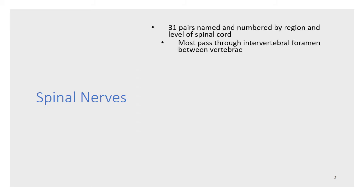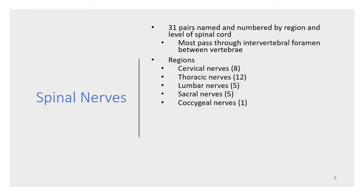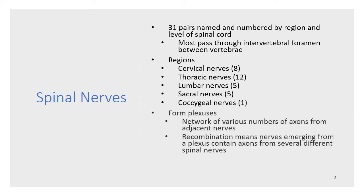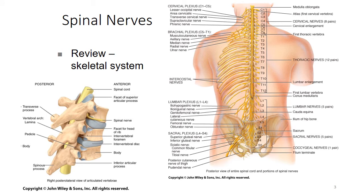You'll recall that there are 31 pairs of spinal nerves which are named and numbered by region and level of spinal cord, and that they pass through the intervertebral foramen between vertebrae. As you know, a plexus is a group of nerves. Networks of various numbers of individual axons from adjacent nerves emerge and then recombine, so nerves within a single plexus may often contain axons from several different spinal nerves. The ventral rami of each of the spinal nerves C5 to T1 form the brachial plexus and provide motor and sensory innervation of the upper limb. They each leave the intervertebral foramen of the vertebra and pass through the posterior triangle of the neck, where they extend over the first rib and into the axilla.